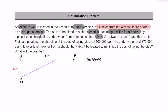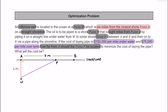Point P is where the underwater pipeline connects to the shoreline, and from P the pipeline continues along the shoreline to point B. There are two costs: $100,000 per mile for the underwater pipeline and $75,000 per mile for the overland portion, since underwater construction is more difficult. The question is how far from point A should point P be located to minimize the total cost of laying the pipe.